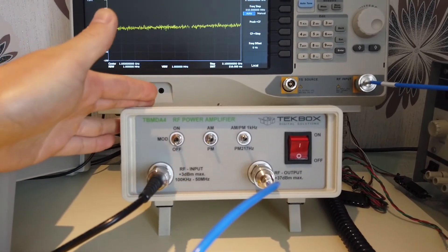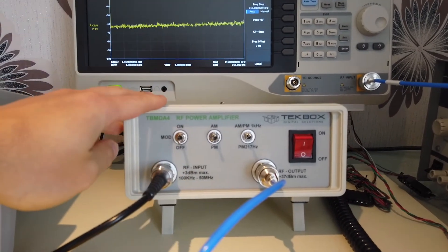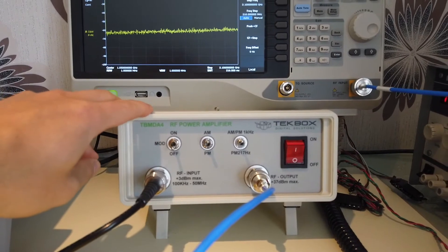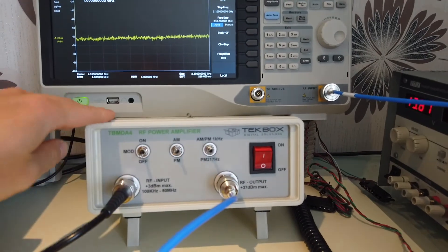If you want to inject a different range, perhaps a 300 MHz or even higher frequency, you can use a TBMDA3, which works in a different frequency range. But the output is also 37 dBm.